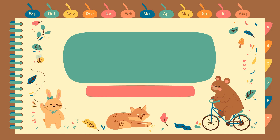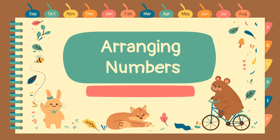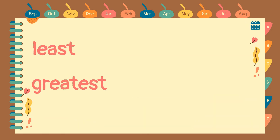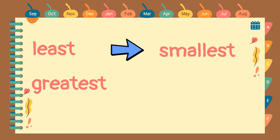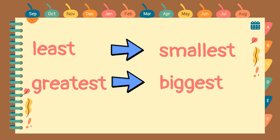Today, kids, we will be discussing about arranging numbers. First, we're going to arrange numbers from least to greatest. Let's define first least and greatest. When we say least, this number has the smallest value. And when we say greatest, kids, this number has the biggest value.